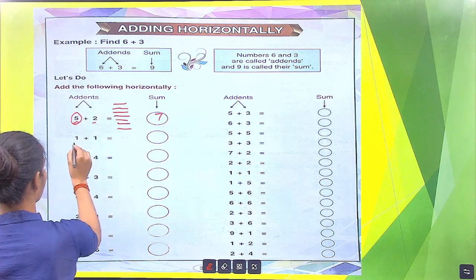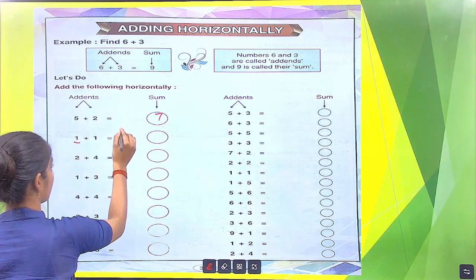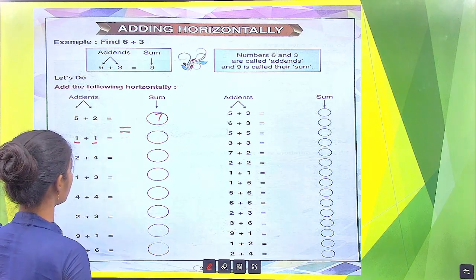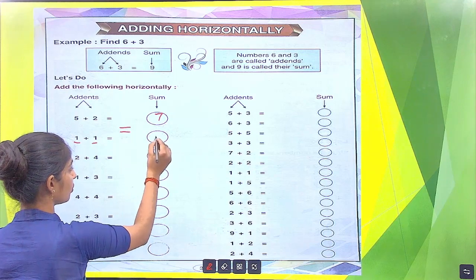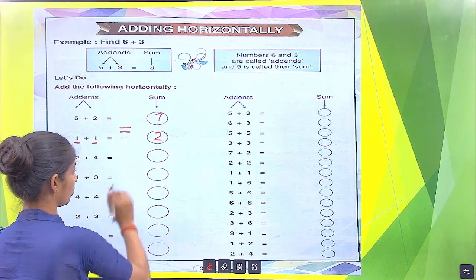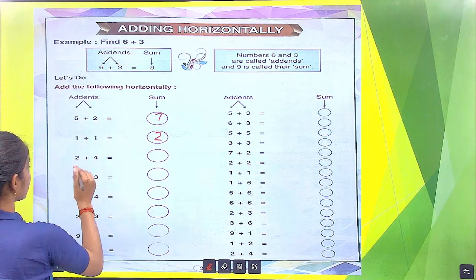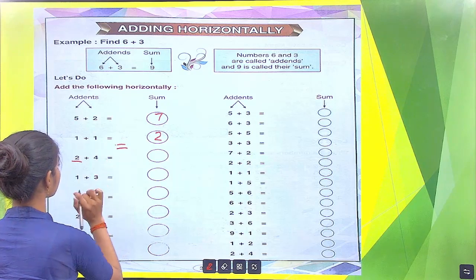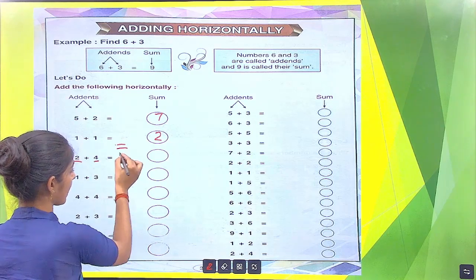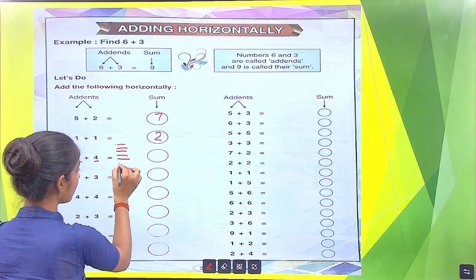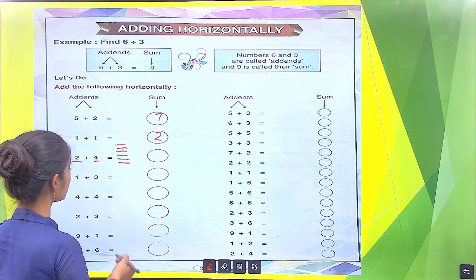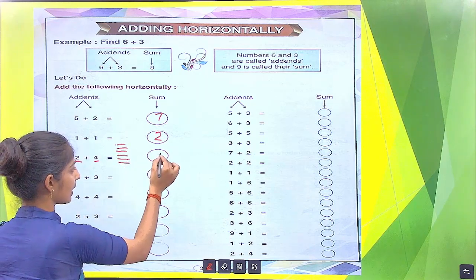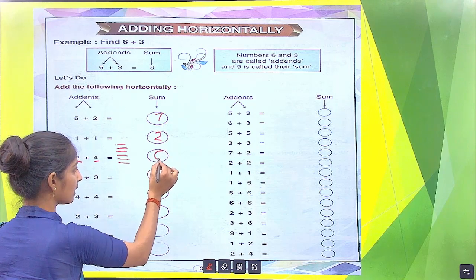Similarly, there is 1. So we draw 1 line. There is also 1, so we draw 1 more line. There are how many total lines? 1, 2. We put here 2. Next, there are 2, so we draw 2 lines: 1, 2. There are 4, so we draw 4 more lines: 1, 2, 3, 4. Count the total lines: 1, 2, 3, 4, 5, 6. There are 6 lines total. So we put here 6.